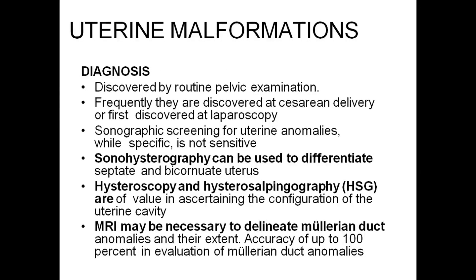Uterine malformation: often discovered by routine pelvic examination, or frequently first discovered at cesarean delivery or laparoscopy. Sonographic screening of uterine abnormalities: sonography can be used to differentiate septate and bicornuate uterus. Hysteroscopy and hysterosalpingography are of high value in ascertaining the configuration of the uterine cavity. MRI is necessary to delineate the Mullerian duct anomalies and their extent, with accuracy up to 100% in the evaluation of Mullerian duct anomalies.